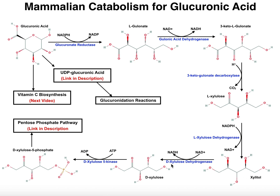Xylitol can then be re-oxidized into the D-isomer of xylulose by D-xylulose dehydrogenase. The electrons are going to be taken from this hydroxyl group right here, and it's going to be oxidized into a carbonyl with the subsequent production of NADH for energy. This D-xylulose will then be phosphorylated at the position on the right side by D-xylulose 5-kinase, using ATP, giving you both ADP and xylulose-5-phosphate, which is the form of this compound that's actually going to be input into the pentose phosphate pathway.